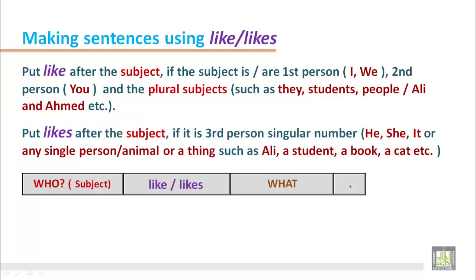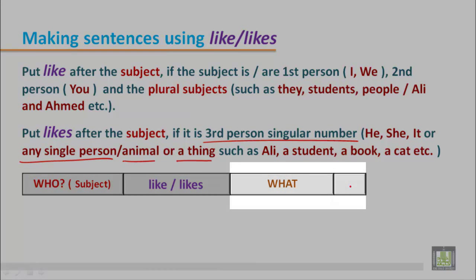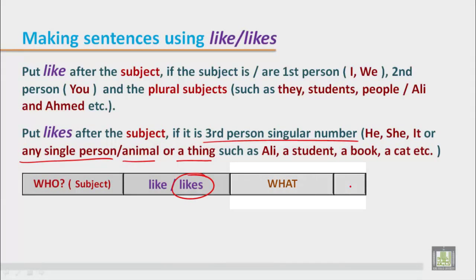If the subject is third person singular, like he, she, or any single name, single person, animal, or thing, we have to use likes after the subject. Then we put additional information — for what, where, or anything else — and end the sentence with a full stop.